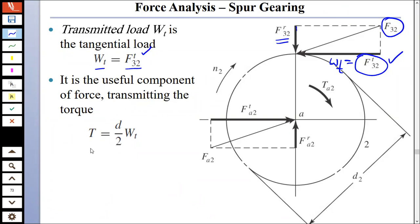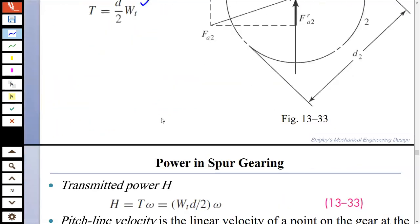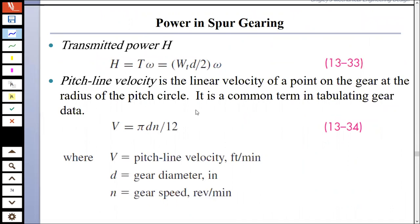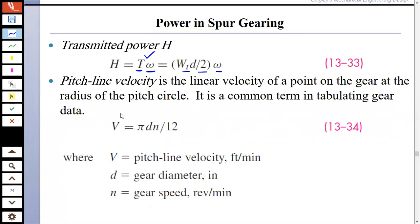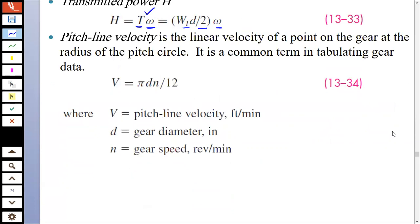Now, it is the useful component of force, and this is the torque that we are talking about, TA2. This is the torque at gear number two which shaft A is exerting. That is equal to D by two, which is R, basically radius times WT. Now, if we talk about horsepower, what is horsepower equal to? Horsepower is equal to T omega, which is the velocity. So, since we know the value of T, that is equal to WT D by two times omega.